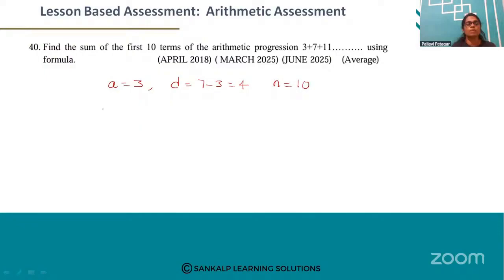The formula for the sum of N terms is Sn equals N by 2 into 2A plus N minus 1 into D.